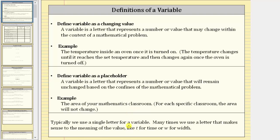Let's first look at the definition of a variable as a changing value. A variable is a letter that represents a number or value that may change within the context of a mathematical problem.